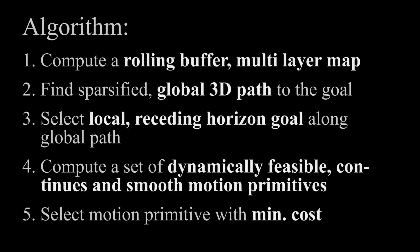The algorithm consists of five steps: compute rolling buffer multi-layer map; find sparsified global 3D path to the goal; select local receding horizon goal along the global path; compute set of dynamically feasible continuous and smooth motion primitives; select motion primitive with minimum cost.